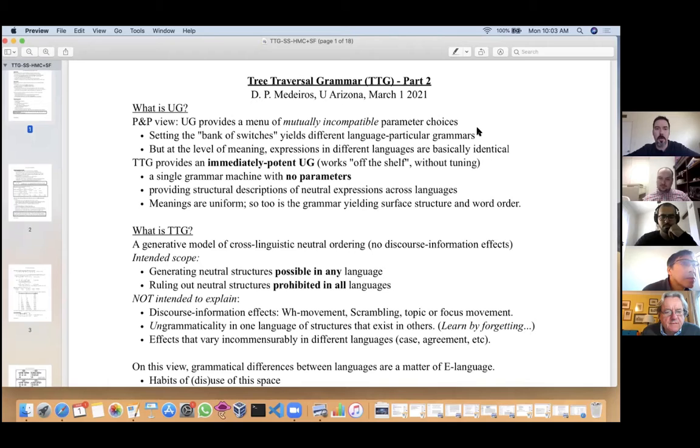To understand what this theory is about, it's helpful to start by talking about the nature of universal grammar. The now dominant view in generative syntax is the principles and parameters view, where we think of universal grammar as providing a menu of mutually incompatible parameter choices—a bank of switches you've got to set each one way or another, and you end up with one of an ultimately finite number of different language-particular grammars.